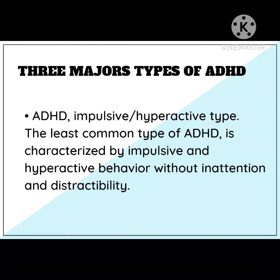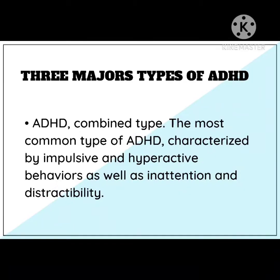The next is ADHD impulsive-hyperactive type. The less common type of ADHD is characterized by impulsive and hyperactive behavior without inattention and distractibility. The person fidgets and talks a lot, and it is hard for them to stay still for long. Smaller children tend to run, jump, or climb constantly. The individual feels restless and has trouble with impulsivity. Someone who is impulsive may interrupt others a lot, grab things from people, or speak inappropriately. It is hard for the person to wait for their turn or listen to directions, and a person with impulsiveness may have more accidents and injuries than others.